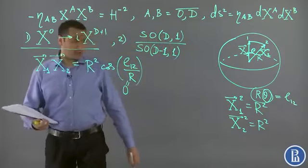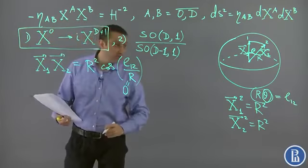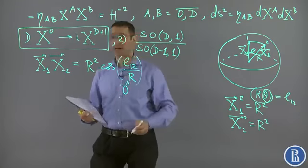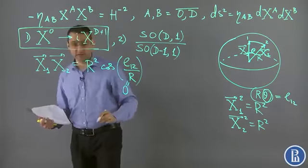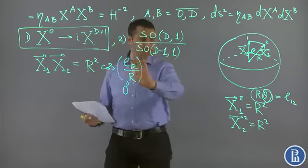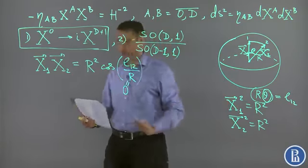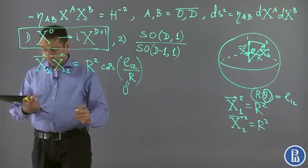In fact, Wick rotation helps us to see that the same procedure can be applied in this case, even without drawing the pictures. In D dimensions, this procedure on the spheres is similar, so using Wick rotation we can define the so-called hyperbolic distance.